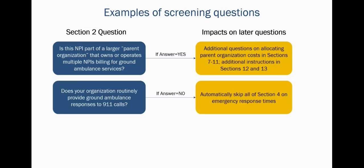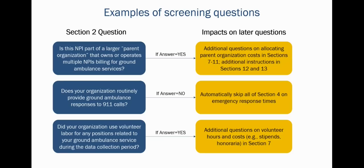Another example: section two asks if your organization routinely provides ground ambulance responses to 911 calls. While most EMS organizations will answer yes, organizations that only provide scheduled transports will answer no, and the GADCS will automatically skip section four which asks about emergency response times. Similarly, section two asks if your organization uses volunteer labor. If yes, you'll see questions in section seven about hours worked by volunteers and costs like stipends. If no, those questions won't appear.